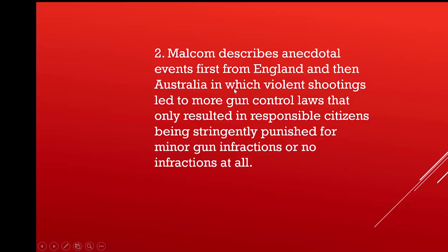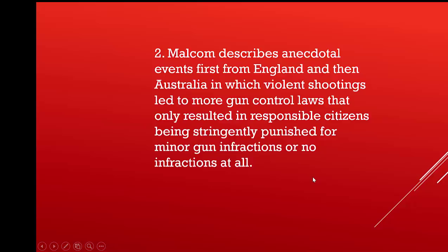It's a mouthful, and it basically tells everything that Malcolm does in the article. Anecdotal events is the type of evidence she's producing, first from England and then from Australia — this is the chronological order in the article. Then why did she bring forth these pieces of evidence? Violent shootings led to more gun control laws, but that kind of inhibited citizens from protecting themselves.